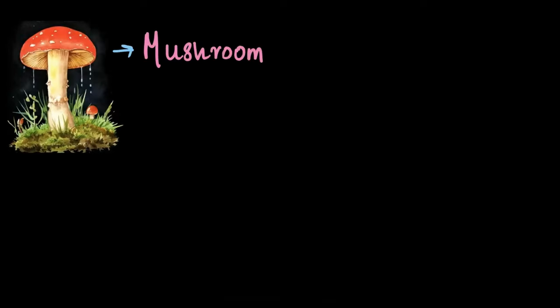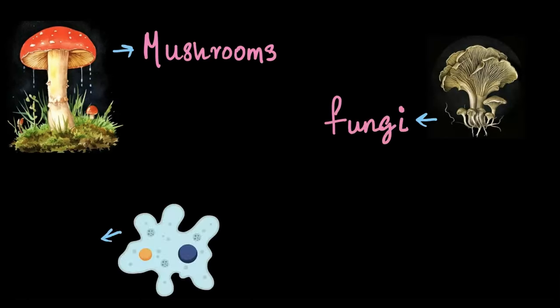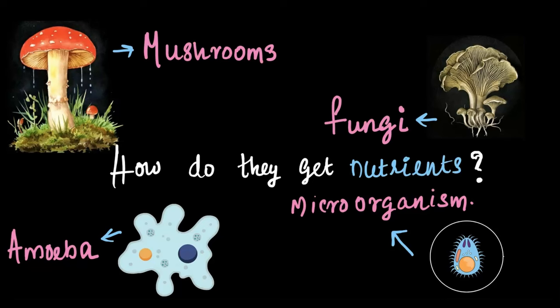Now that you know about photosynthesis, have you ever thought about how organisms like mushrooms, fungi, or even an amoeba — which is a microorganism — survive without having a mechanism to produce their own food? If they can't make their own food, how do you think they are going to get their nutrients? Big questions!